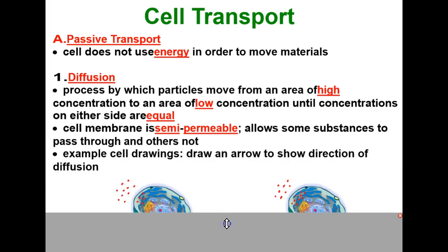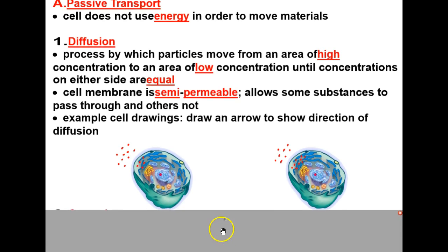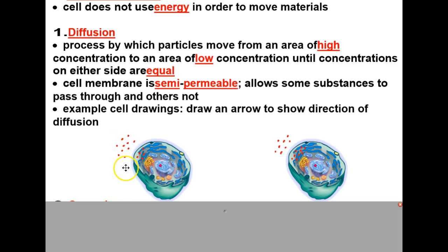Looking at some cell drawings, we have a couple of examples to discuss diffusion. The directions say to draw an arrow to show the direction of diffusion. Let's start with the cell on the left. We have ten particles that are allowed to pass through the semi-permeable cell membrane on the outside of the cell.